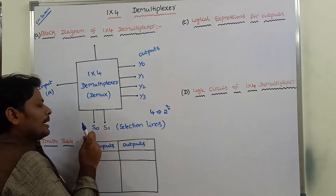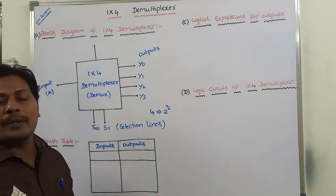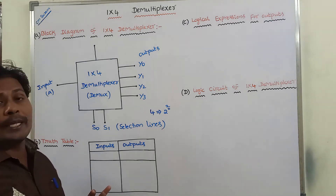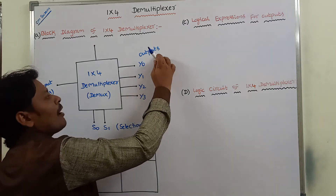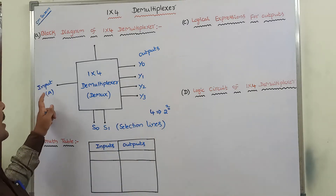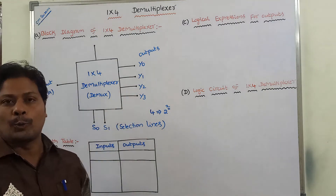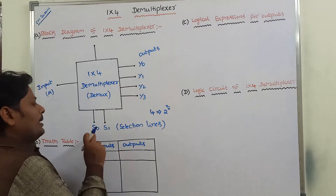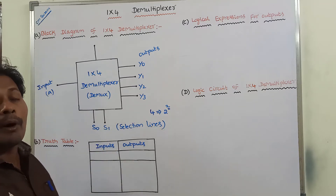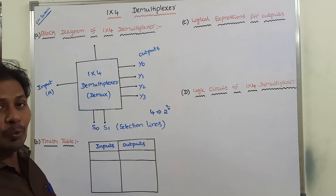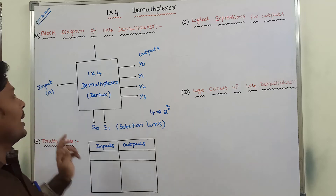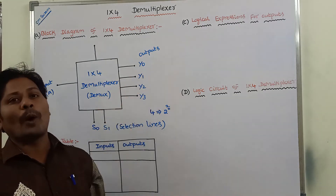For example, when S0, S1 value is equal to 0, 0, the equivalent decimal value is 0, therefore Y0 output is selected and input line A is connected to Y0 output. Next, when S0, S1 value is equal to 0, 1, the equivalent decimal value is 1, therefore Y1 output is selected and input line A is connected to Y1.